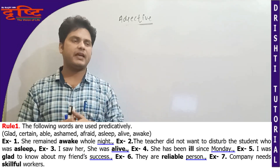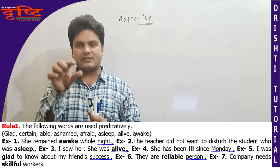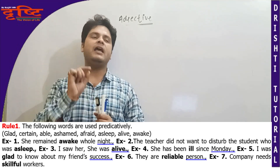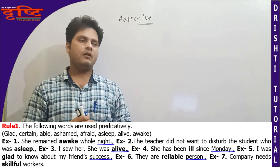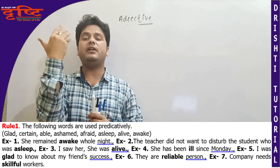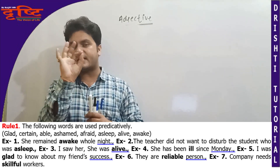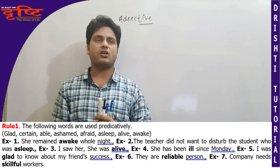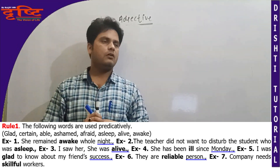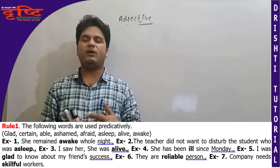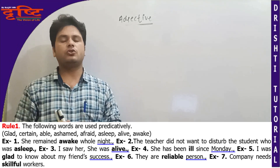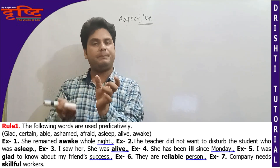Example number three: 'I saw her, she was alive.' Alive shabd last mein hai, uske just baad koi noun nahi — predicatively hai. Example number four: 'She has been ill since Monday' — woh Monday se bimar hai. Ill ke baad koi noun ka placement nahi jisse uska modification ho — predicative use. Example number five: 'I was glad to know about my friend's success.' Glad bhi predicatively use hua hai.